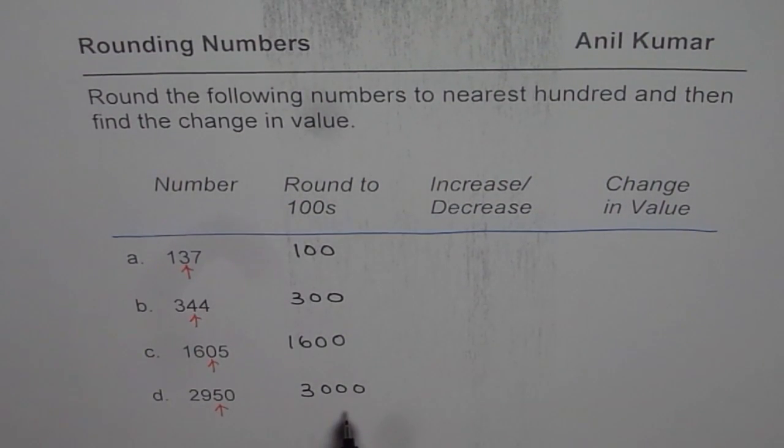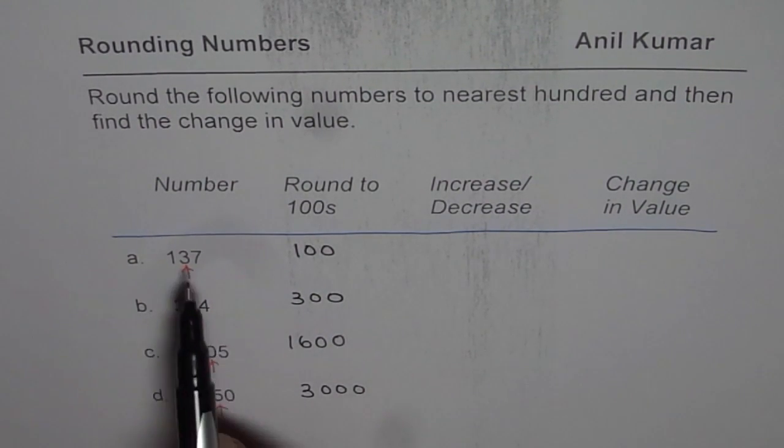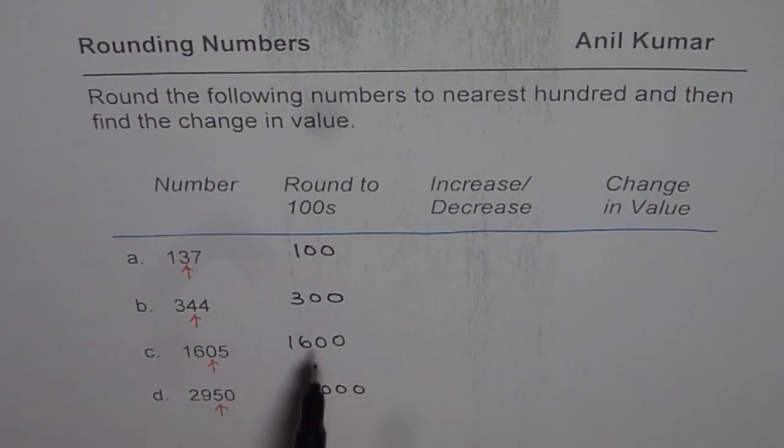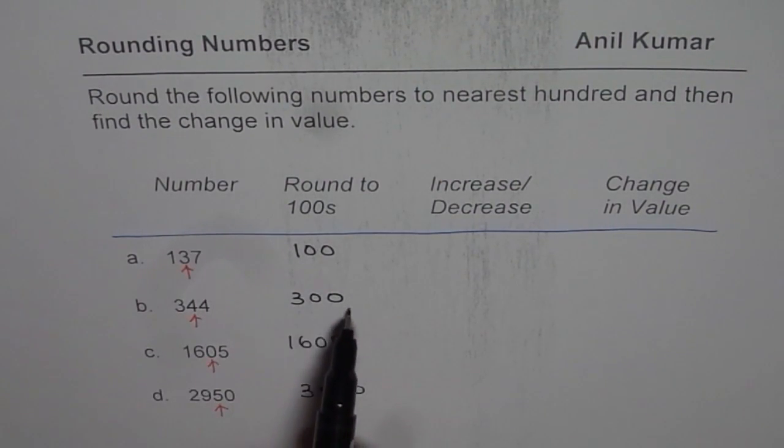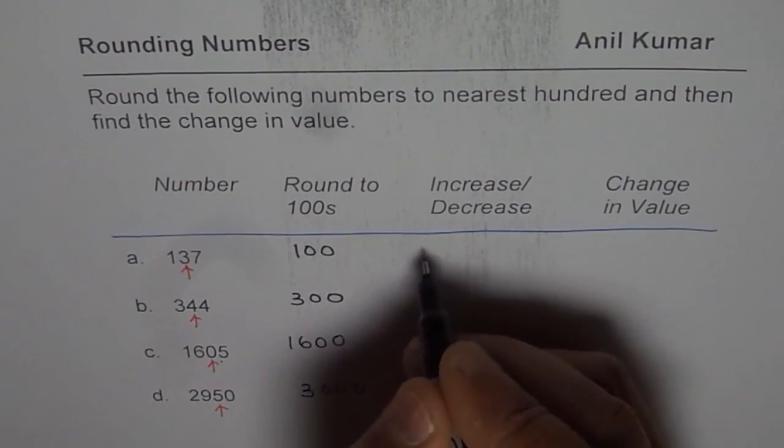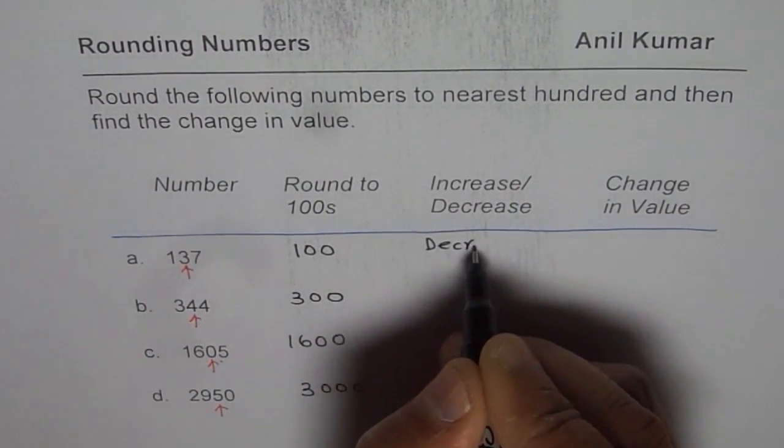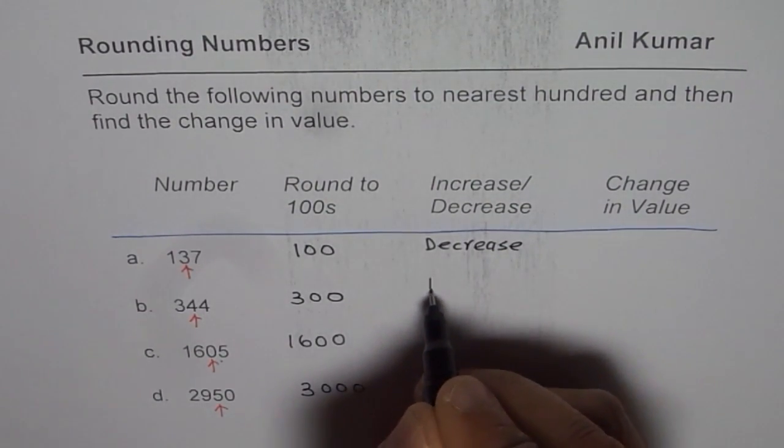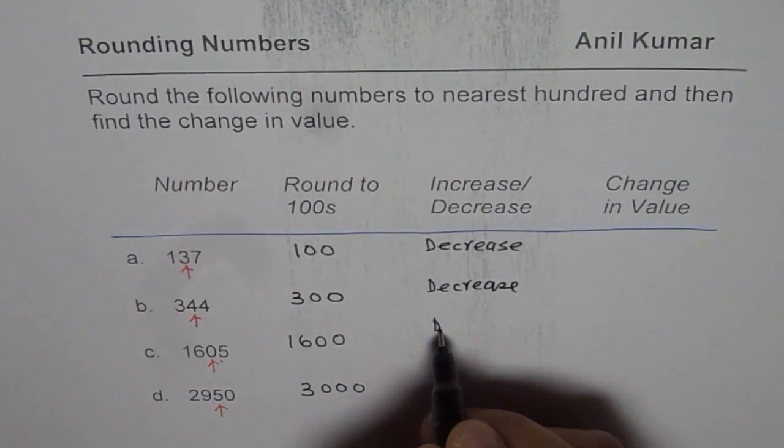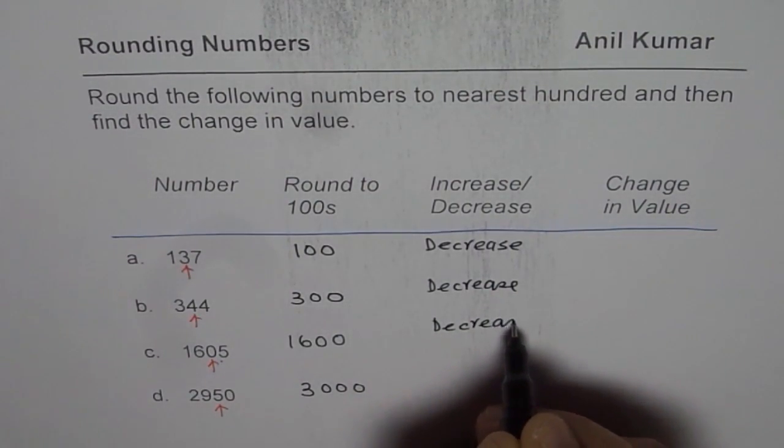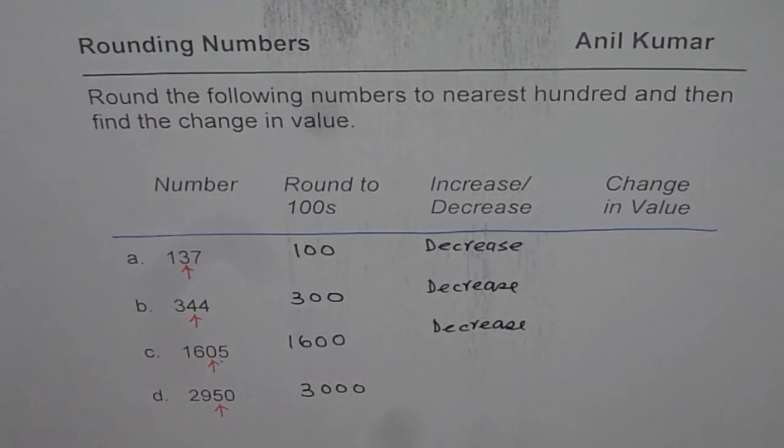After rounding, let us see whether the numbers increased or decreased. In first three examples, 137 to 100, 344 to 300, 1,605 to 1,600, we find that the numbers have decreased. So there is a decrease in value of the number when we rounded the first three numbers. Can you tell me the reason?